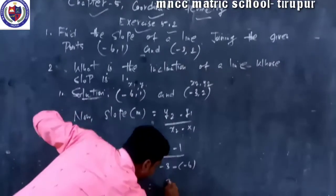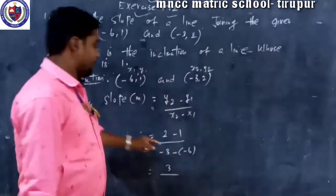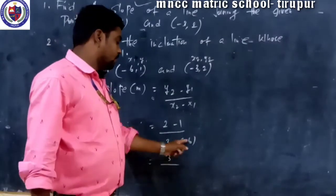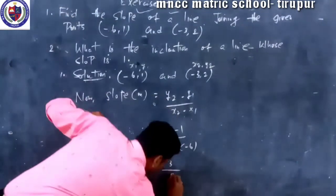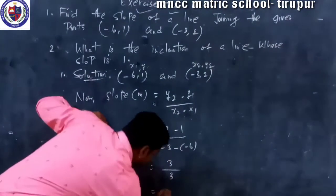2 minus 1, 1. Minus 3, the nearest minus 1 is plus 6, plus 6. 3 by 3, 1.